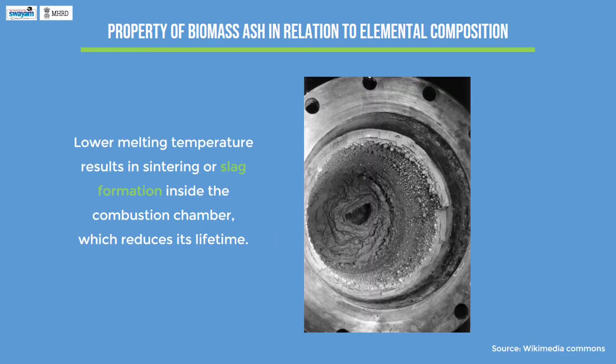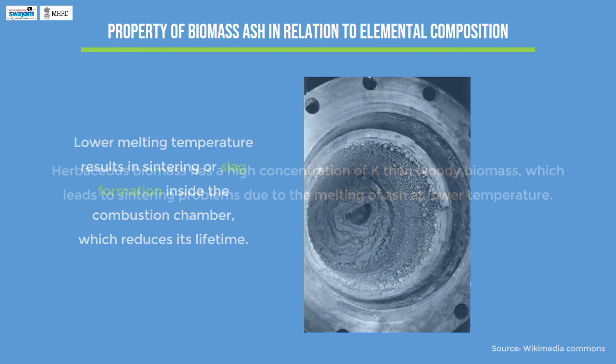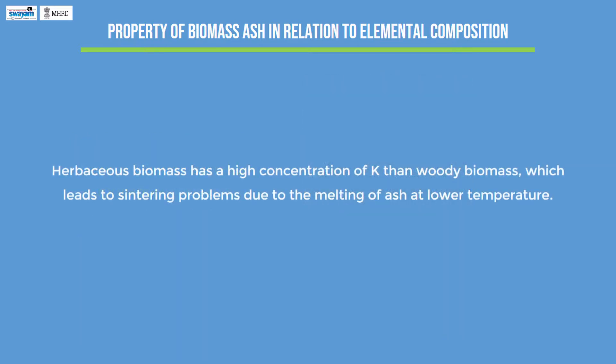A lower melting temperature results in sintering or slag formation inside the combustion chamber, which reduces its lifetime. Herbaceous biomasses have a higher concentration of potassium than woody biomass, which leads to sintering problems due to the melting of ash at lower temperatures.